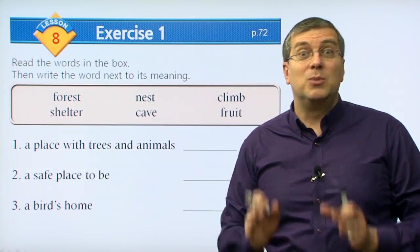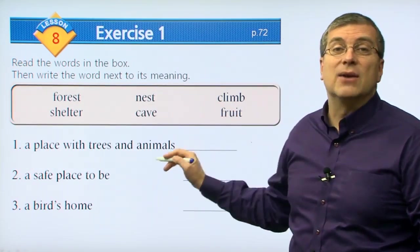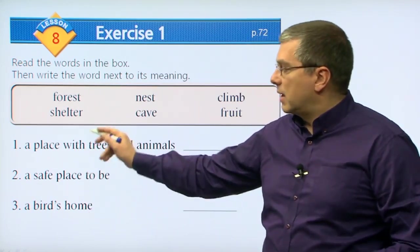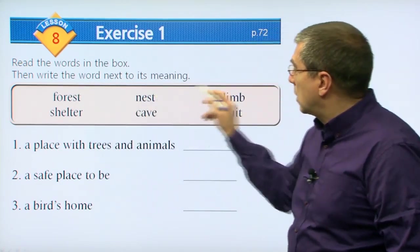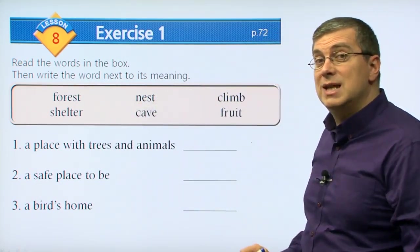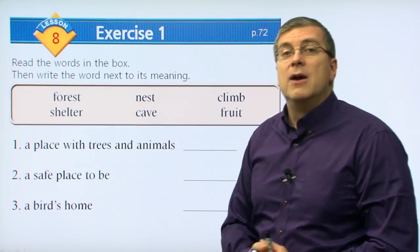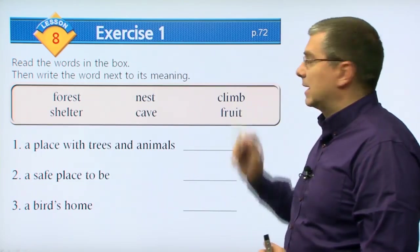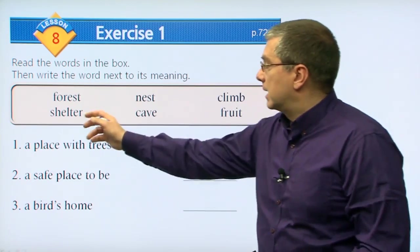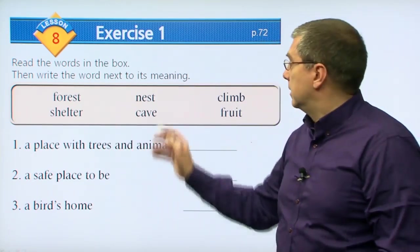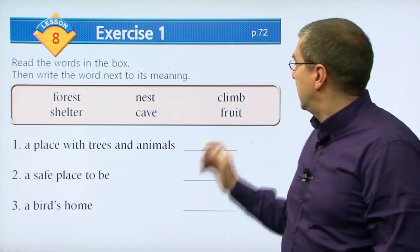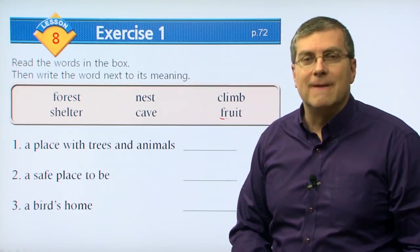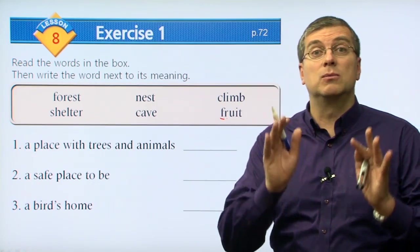Now let's use that vocabulary we just learned and put them next to their definitions. How good is your memory? Let's test it. In this exercise, we have definitions and words to match. Let's review very quickly: forest, nest, climb, shelter, cave, fruit. Fruit is a little difficult because we have the F and the R. So let's take a look at these words and match them with their definitions.